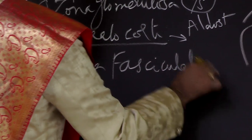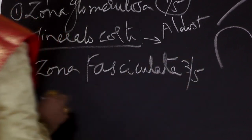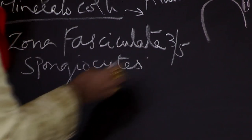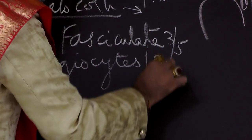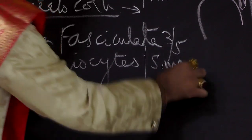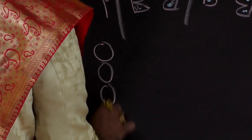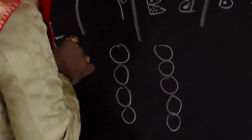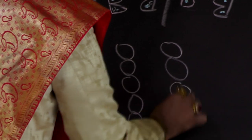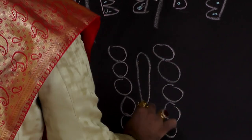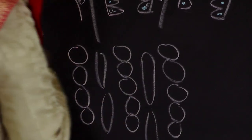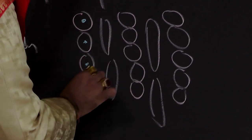The second zone is the zona fasciculata, forming three-fifths of the cortex. The cells here have a special name — spongiocytes. The sinusoids in this zone are very long and vertically arranged, running between the polygonal or rounded spongiocytes.